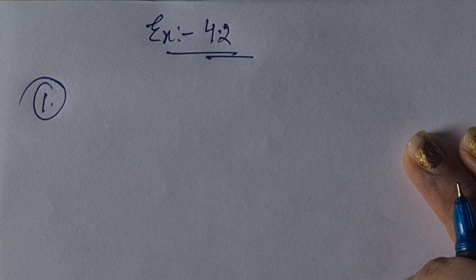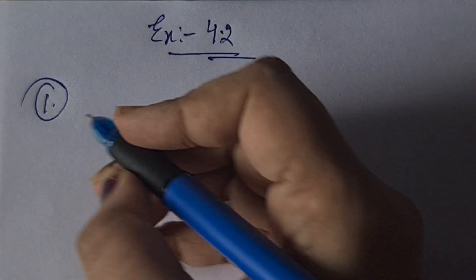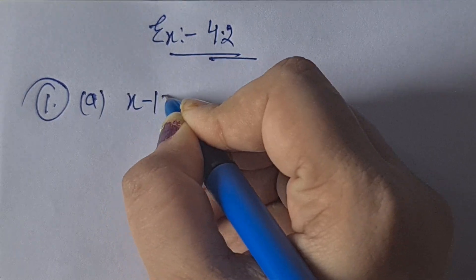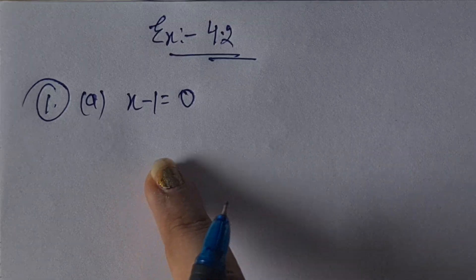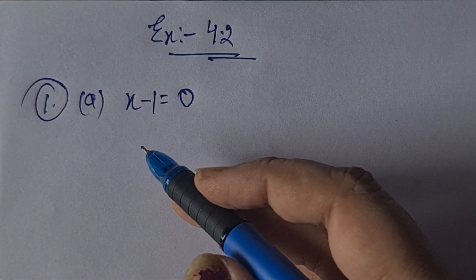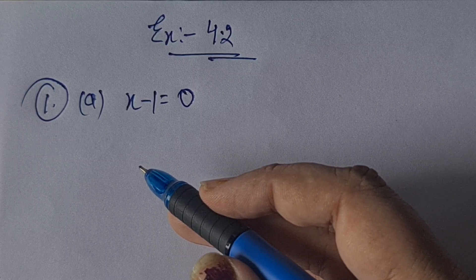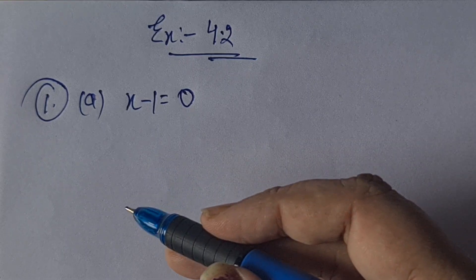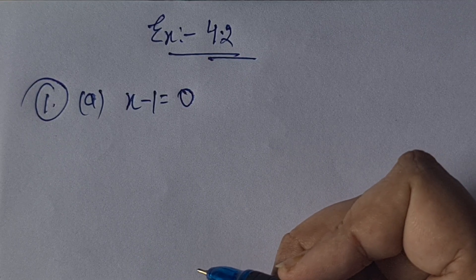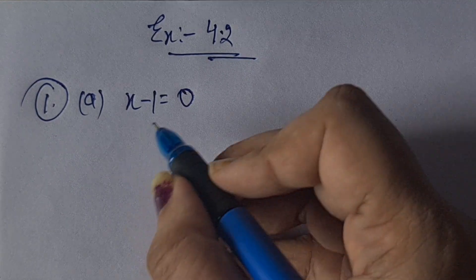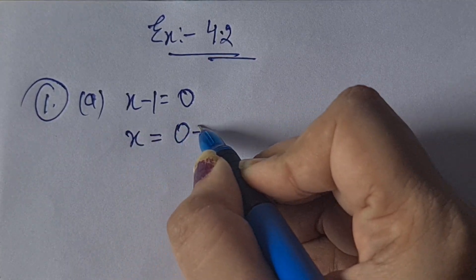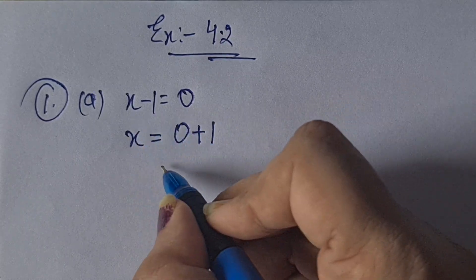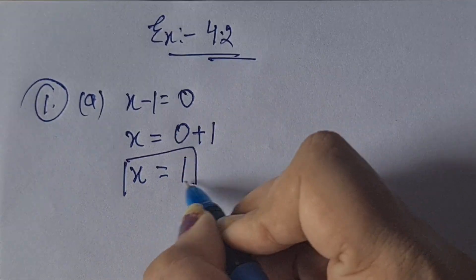Give first the step you will use to separate the variable, and then solve the equation. The first equation is x minus 1 equal to 0. The variable is x, 1 is constant, 0 is also constant. To find the value of the variable, we need to separate it — variable stays on the left side, everything else goes to the right side. So x minus 1 = 0: the minus sign becomes plus when moved to the right, so x = 0 + 1 = 1.